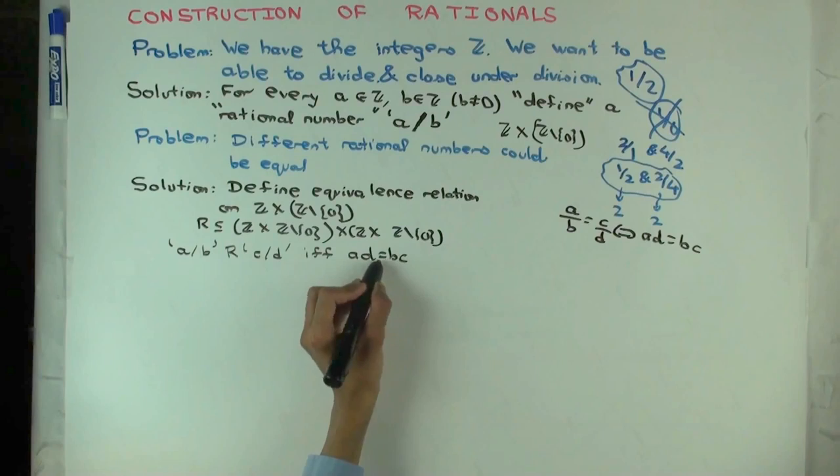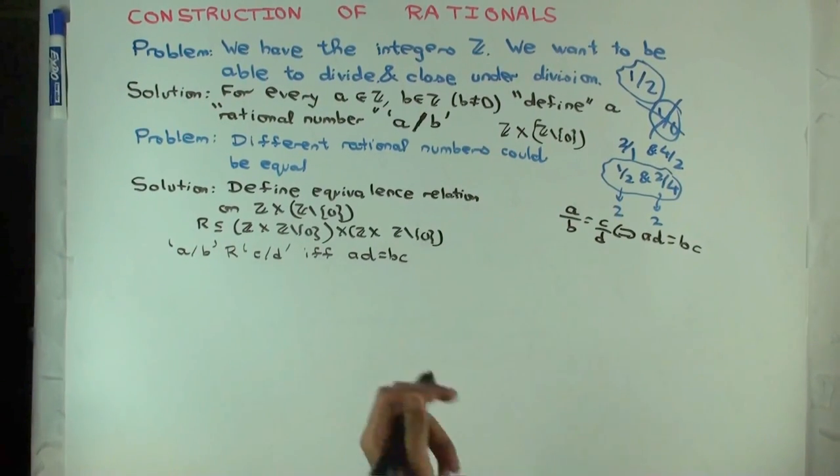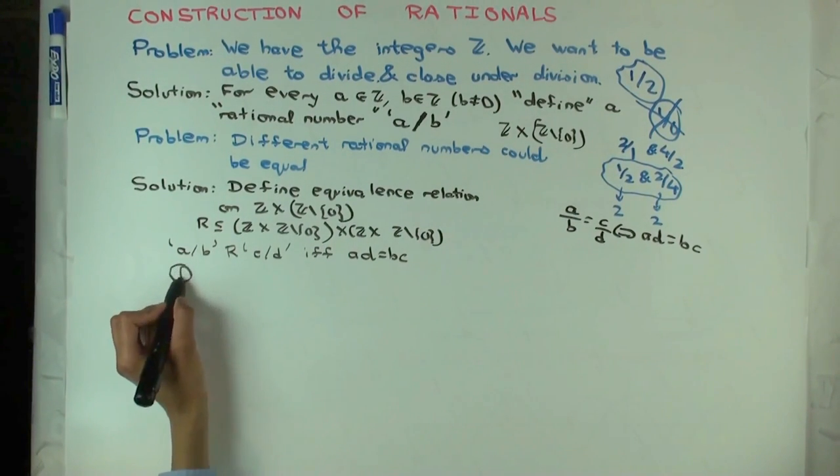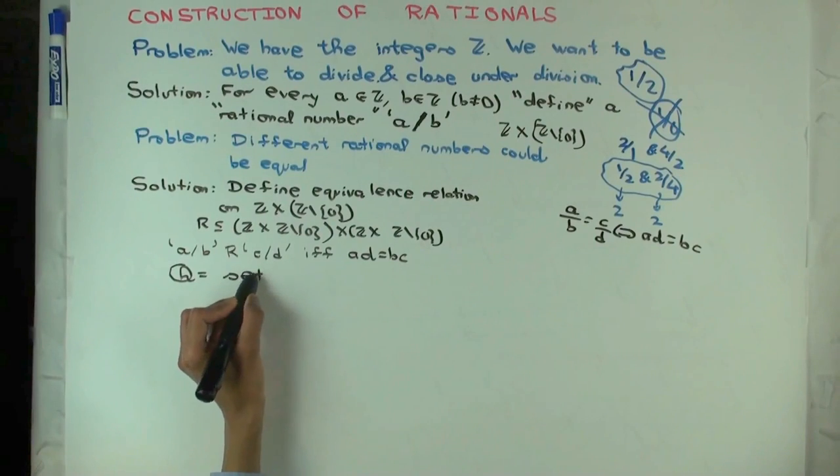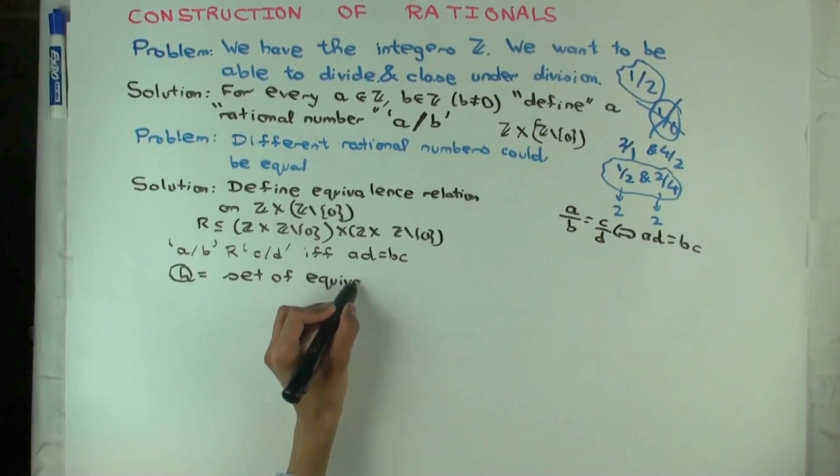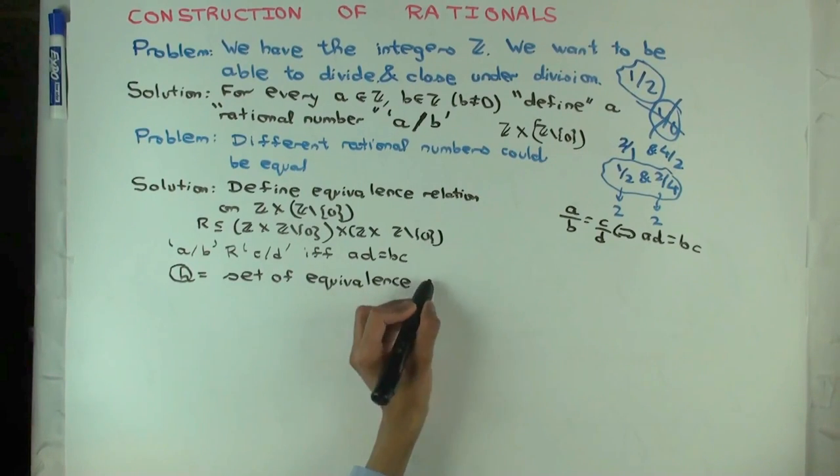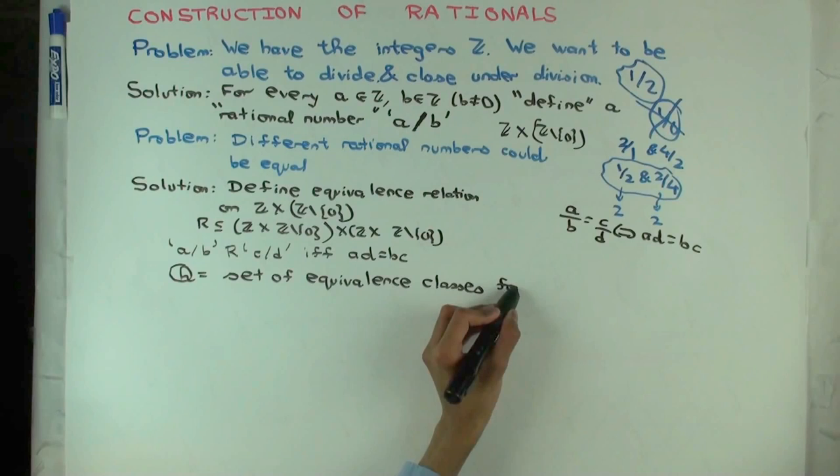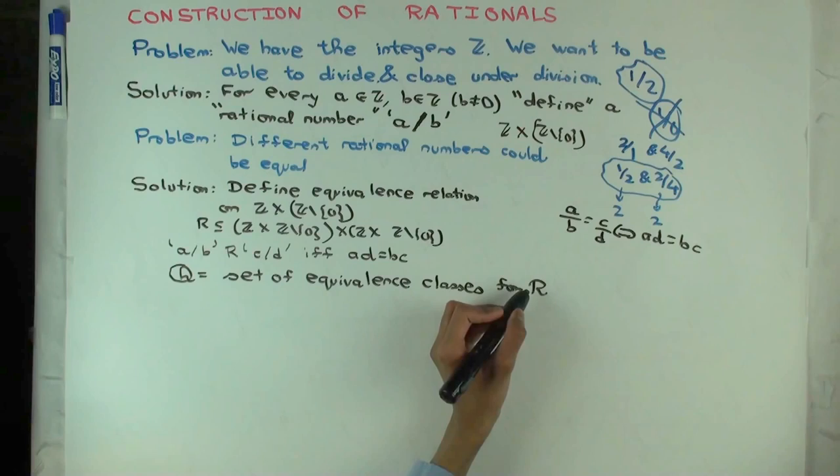So we say A slash B R C slash D if and only if AD equals BC. And can we make sense of this? Yes. Because all of this is just purely with integers. Integer multiplication, integer equality. And so this now defines the rational numbers as a set. Well, we haven't yet done it. So this equivalence relation captures the rational numbers as a set, but now we need to do a little more. We need to say the rational numbers Q is the set of equivalence classes for R.